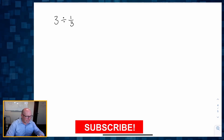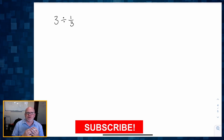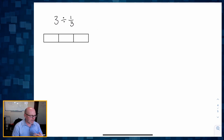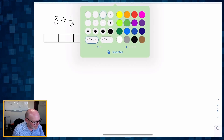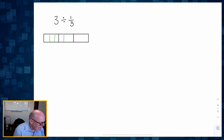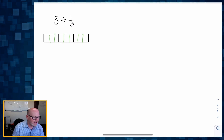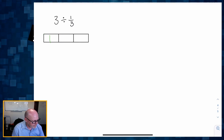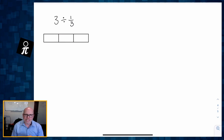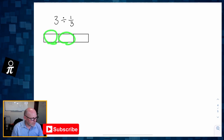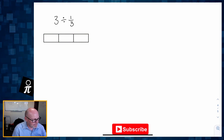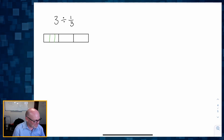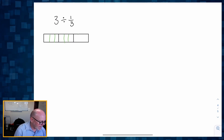We're going to start with three divided by one third — something super simple. The question is: what does three divided by one third mean? It means we're wondering how many thirds fit into three. So I cut each of my three whole numbers into thirds.